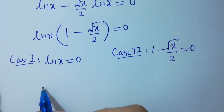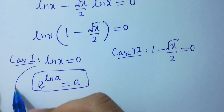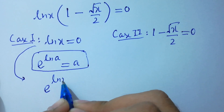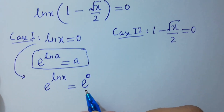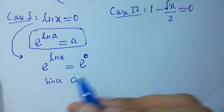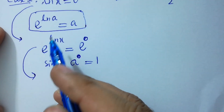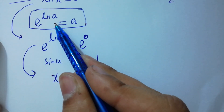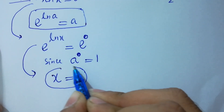In Case 1, since e to the power ln x equals x, we raise e on both sides: e to the power ln x equals e to the power 0. Since any number to the power 0 equals 1, and e to the power ln x equals x, we get x equals 1.